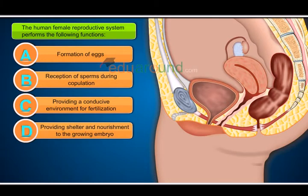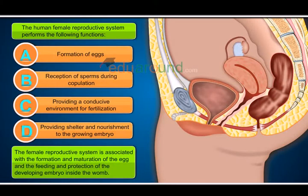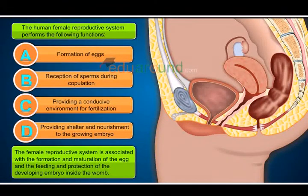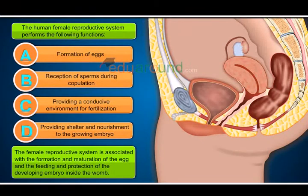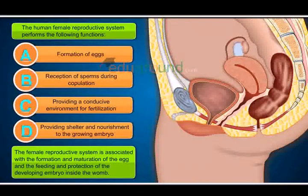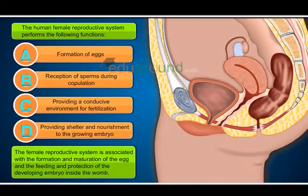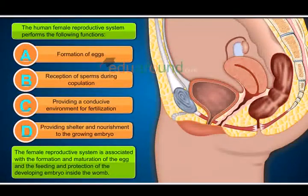D. Providing shelter and nourishment to the growing embryo. The female reproductive system is associated with the formation and maturation of the egg, and the feeding and protection of the developing embryo inside the.